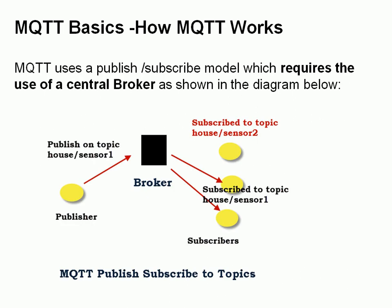MQTT uses a publish-subscribe model and requires the use of a central broker, as shown in the diagram below. We have a publisher that publishes on a topic — this one on the left publishes on a topic called House Sensor 1. We have subscribers which subscribe to topics. You can have multiple subscribers subscribe to individual topics, and here two subscribers are subscribed to House Sensor 1 and will receive all messages sent by any publisher to that topic. Another subscriber is subscribed to a different topic and will receive messages sent to House Sensor 2.